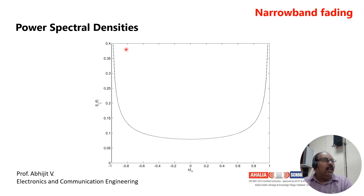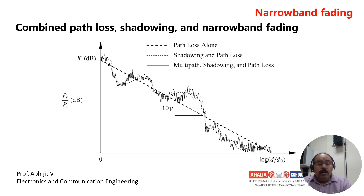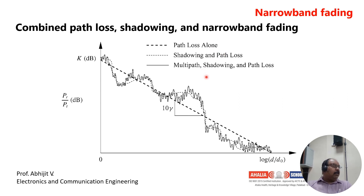You can see the power spectral density curve with respect to the change in frequencies. In case of narrow band fading, this shows what happens to the power spectral density. Next, we are going to compare all the different kinds of path losses in case of narrow band fading.